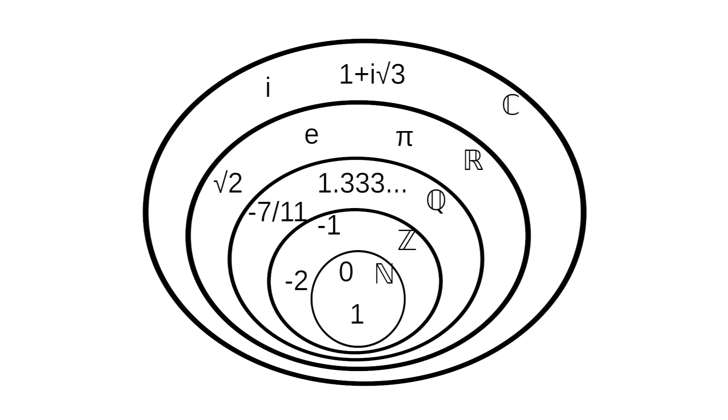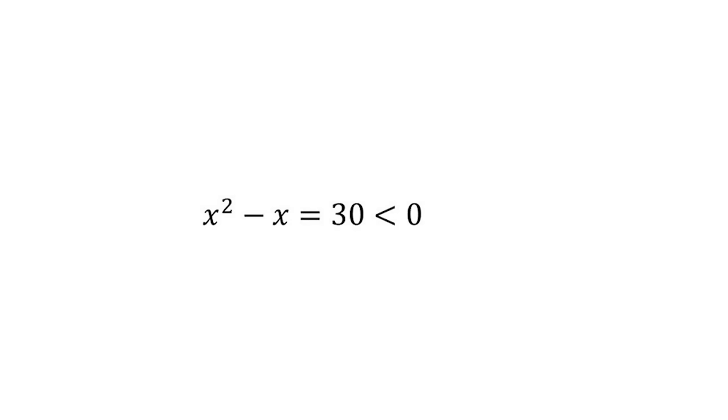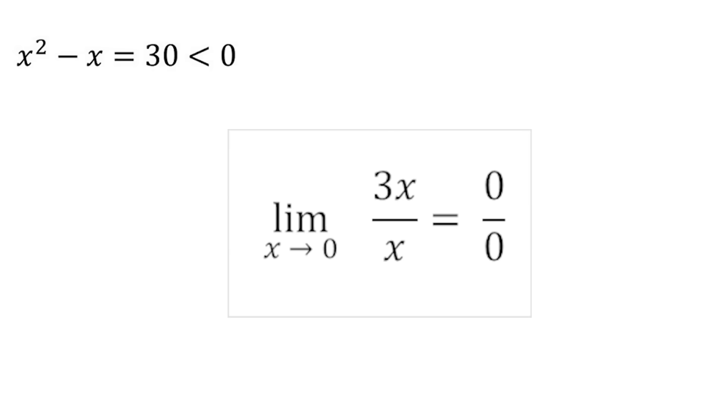The zero constant is an integral part of number systems, such as integers, rational numbers, real numbers, and complex numbers. In algebra, the zero constant is used in equations, inequalities, and various algebraic operations. In calculus, the zero constant is used in limits, derivatives, and integrals, often as a reference point for comparison.